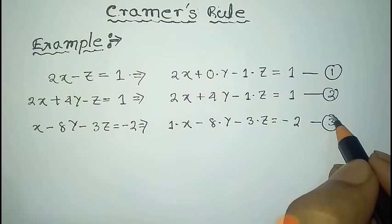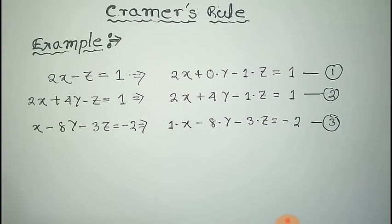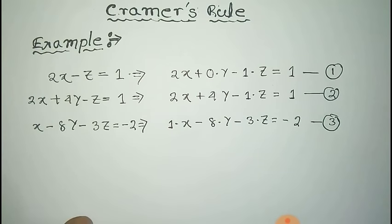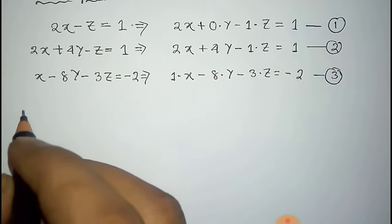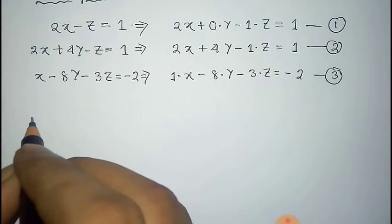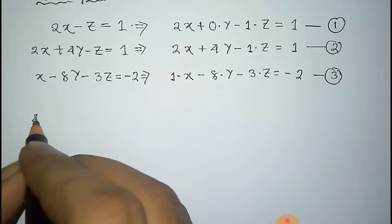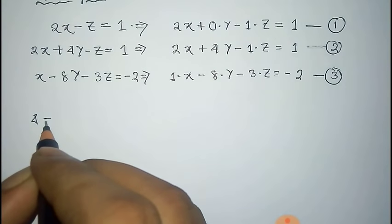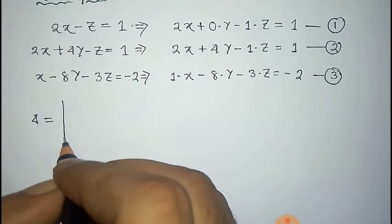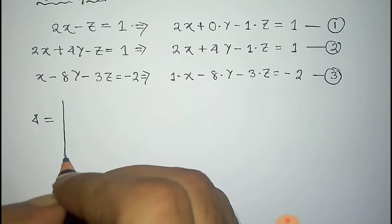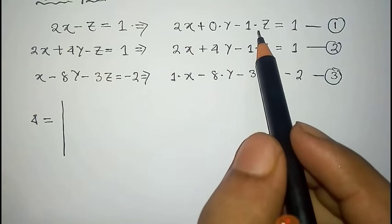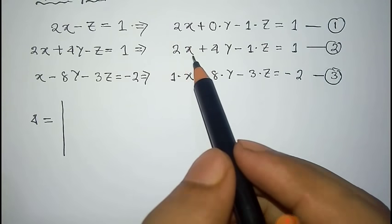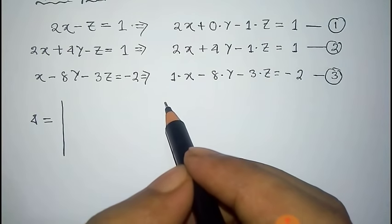We have to solve these three equations by Cramer's rule. First of all, we have to evaluate the value of delta (Δ), that is the determinant consisting of the coefficients of x, y, z of these three equations.